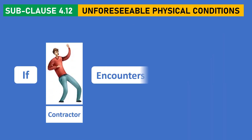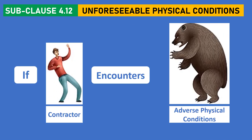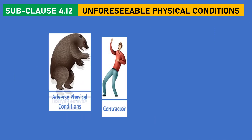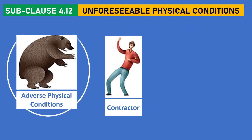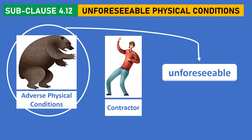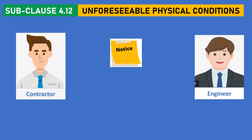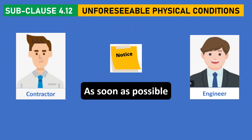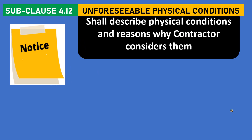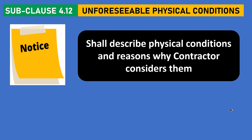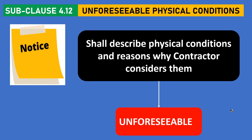If the contractor faces adverse physical conditions which are unforeseeable, the contractor shall provide notice to the engineer as soon as possible. The notice shall describe the physical conditions and the reasons why the contractor considers them unforeseeable.